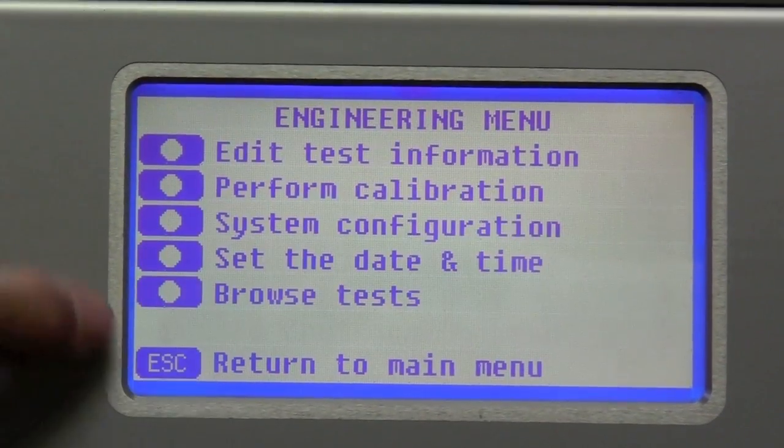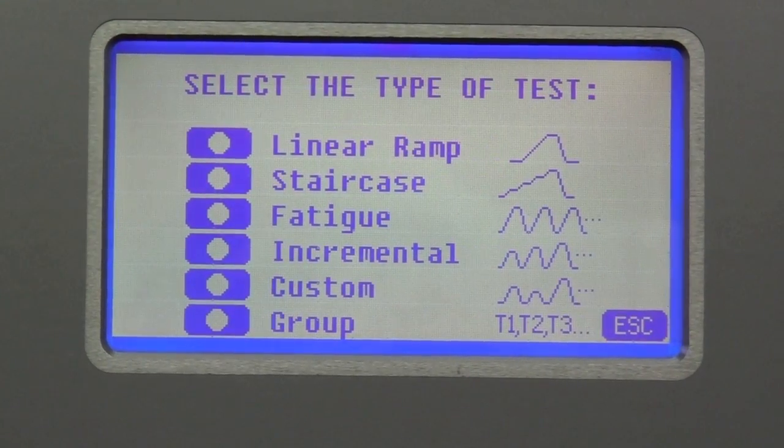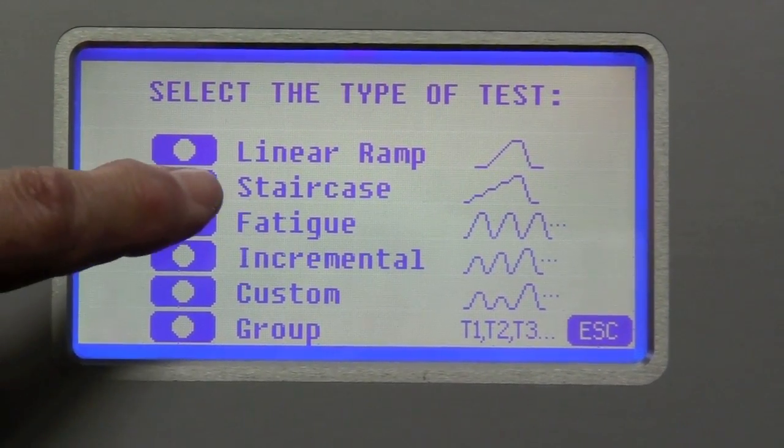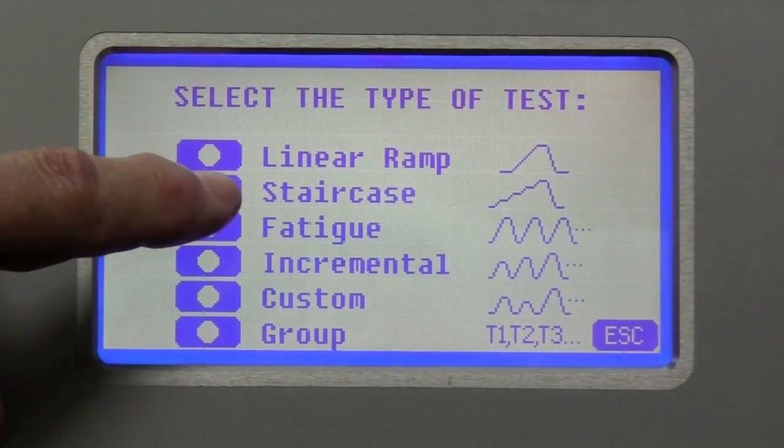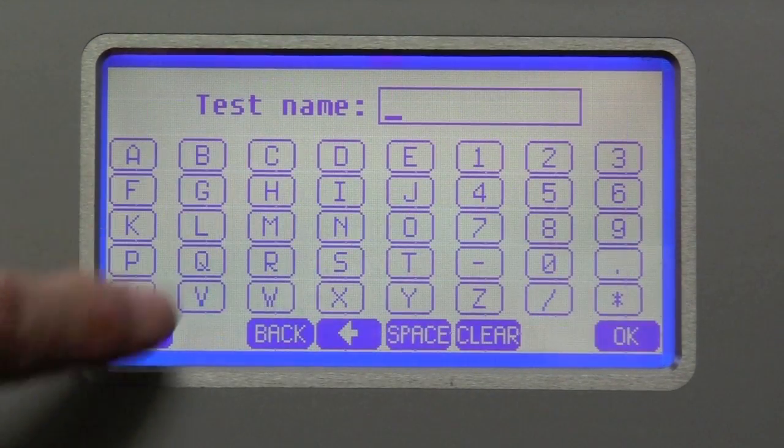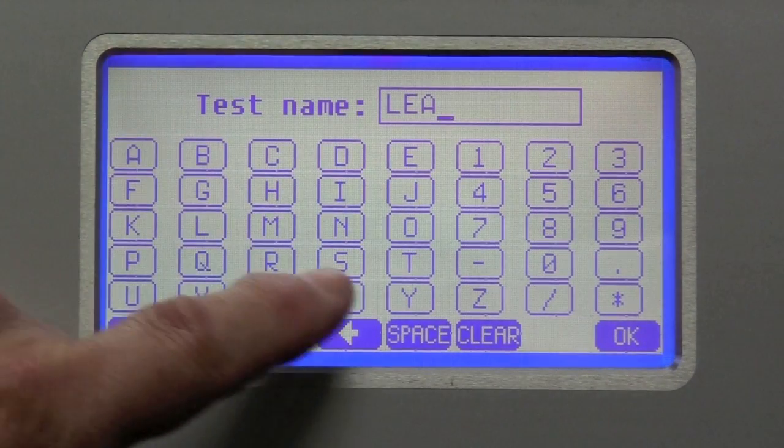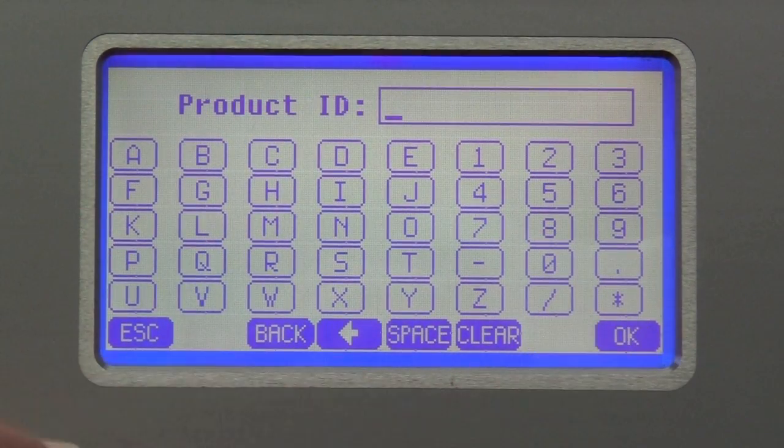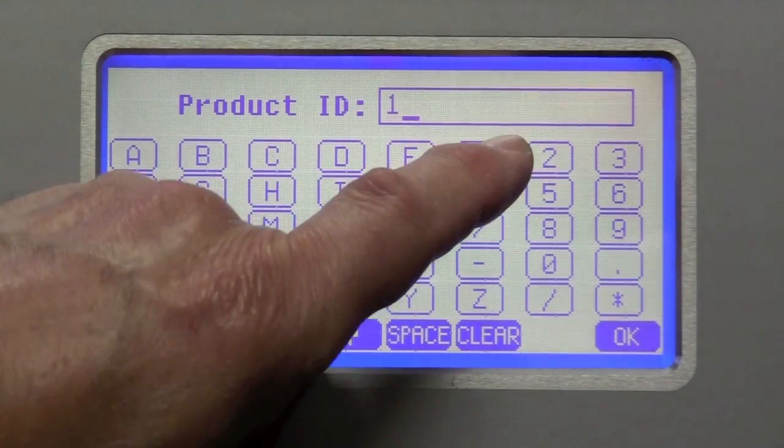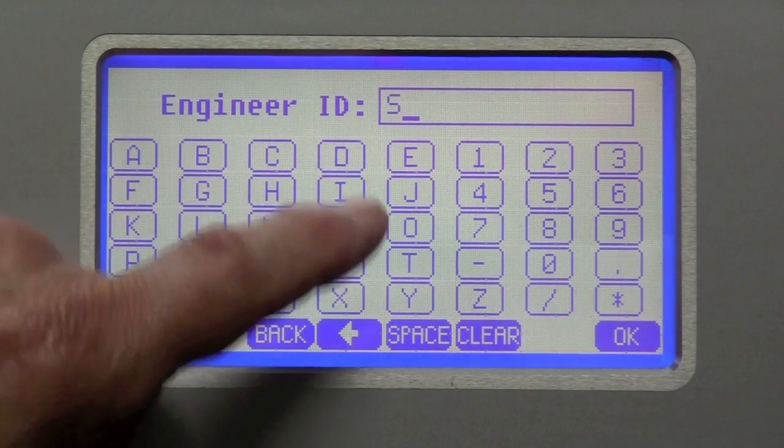I'm going to the engineering menu, to the edit screen, hit the new button, and I'm going to use the staircase test. In this case, I'm going to use PSI and I'm going to call this a leak test. And then the product ID is 123. And I'm the engineer.